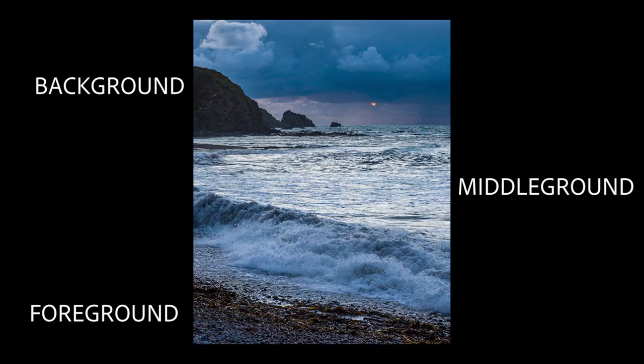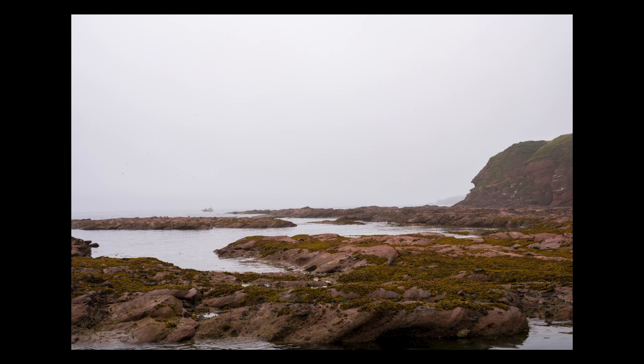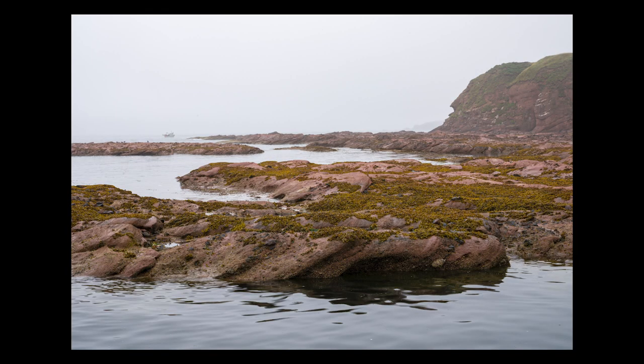Using this technique allows you to add depth to your image because it lets you include a foreground, a middle ground and a background. A mistake many people make when they first get into photography is positioning the horizon bang in the centre of their frame, which can lead to a very flat, displeasing image. However, if you move your camera down slightly to include more foreground and place that horizon on the top third line, you get an image with more depth that looks more three-dimensional.